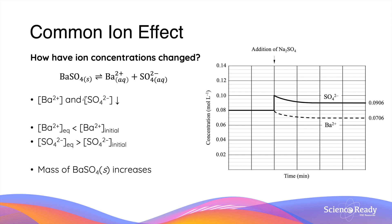Let's have a closer look at how the ion concentrations have changed due to the common ion effect. As we explained earlier using Le Chatelier's principle, both sulfate and barium ion concentrations decrease as a result of the equilibrium position movement. This is better visualized by the graph on the right side. When sodium sulfate is added, the concentration of sulfate ions increases, but the barium concentration stays the same. However, over time, both ion concentrations decrease due to the movement of equilibrium. The concentrations change accordingly until a new dynamic equilibrium is re-established, and this is when the concentrations of both ions remain constant.